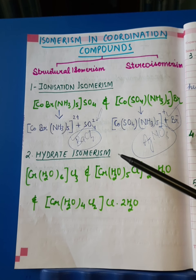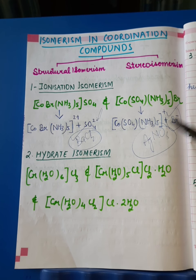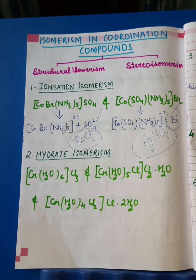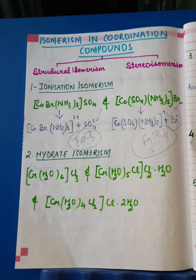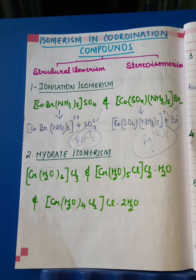Hydrate isomerism is due to the fact that a water molecule can act as a ligand as well as a simple molecule of water of crystallization. When we have two or more complexes differing on that basis — meaning in one complex water is a ligand and in another it is water of crystallization — such coordination compounds are said to have hydrate isomerism.